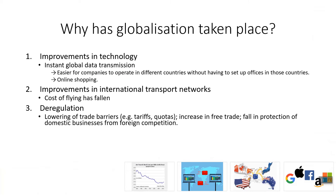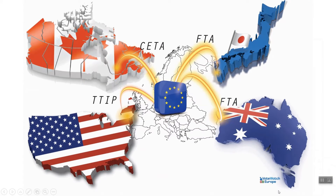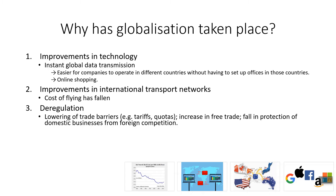Thirdly, deregulation. There has been over time a lowering of trade barriers such as tariffs and quotas and an increase in free trade. We can see from this picture that the EU alone has been engaging in negotiations to forge free trade agreements with different countries. In essence, the fall in the level of state intervention has allowed global markets to flourish, allowing globalization to take place.